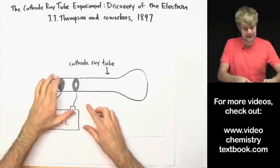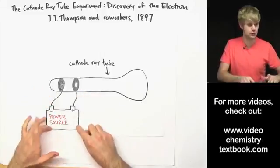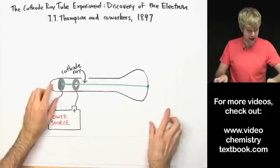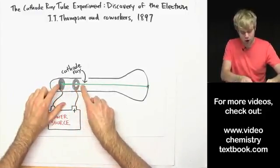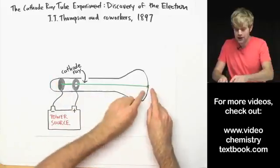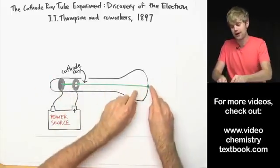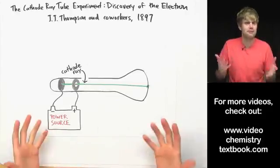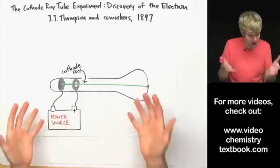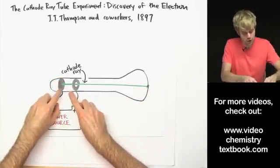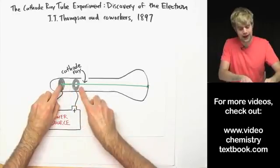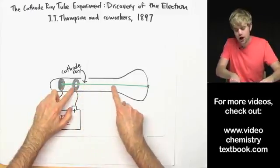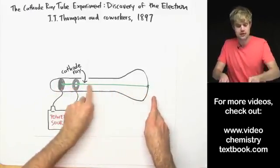Thompson connected these two pieces of metal to a power source and here's what happened. A ray shot from this piece of metal across the tube and created a glowing spot over here when it hit a special coating on the inside of the glass. Now Thompson didn't know what was going on but what really was going on is that electrons from this piece of metal were shooting out. They were attracted to this piece of metal which has an opposite charge but they were moving so fast that they shot all the way across the length of the tube.